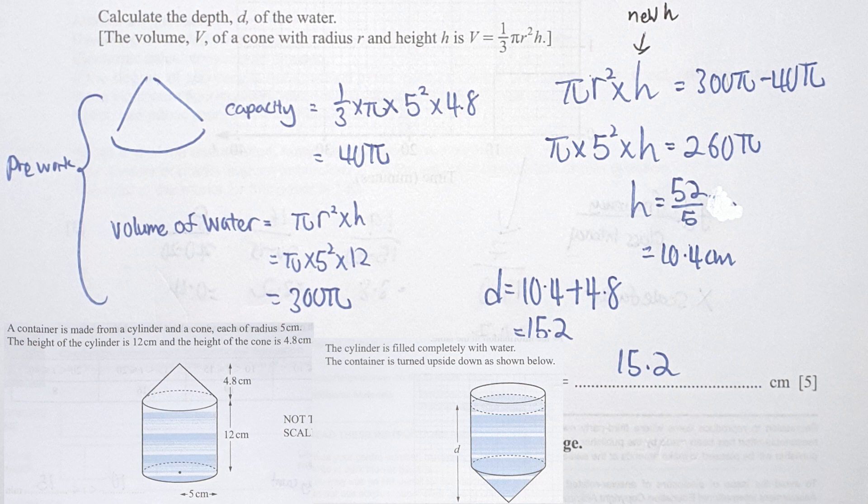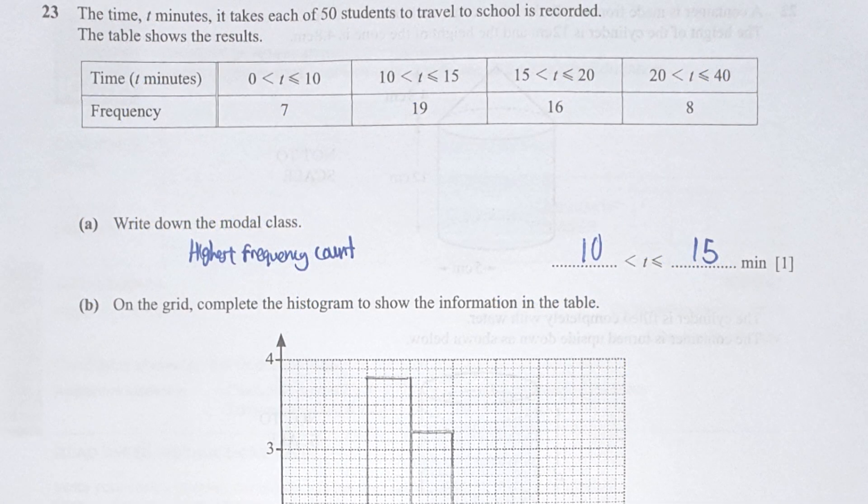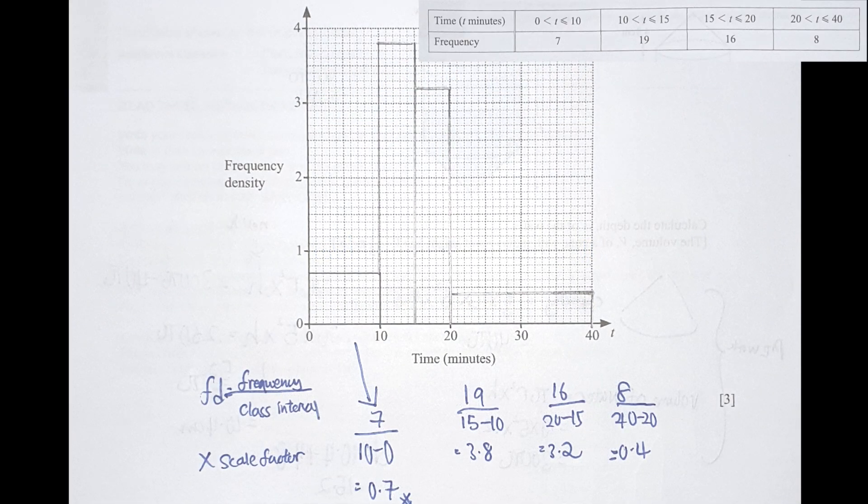For the last question, question 23: write down the modal class. The modal class is the part where it has the highest frequency count, which is t less than equals to 15 and t more than 10. For section b, complete the histogram. Frequency density is actually taking frequency divided by the class interval. As per usual, I will do my ground check to check whether there is a scale factor involvement or not. You take 7 divided by 10, you should get 0.7. This result hints us that there's no scale factor involvement, so you just proceed with the calculation. You should get 3.8, 3.2, and 0.4 respectively.